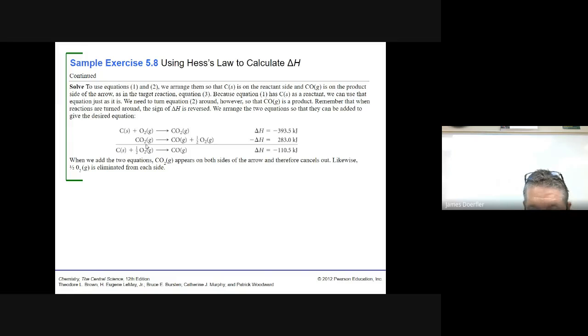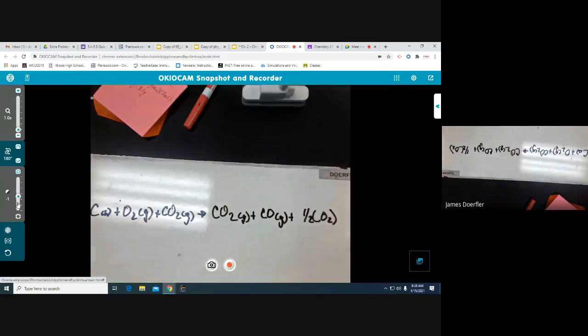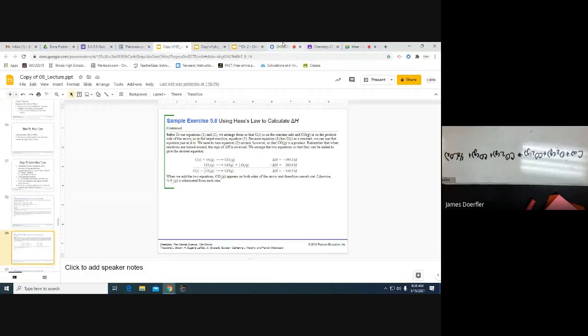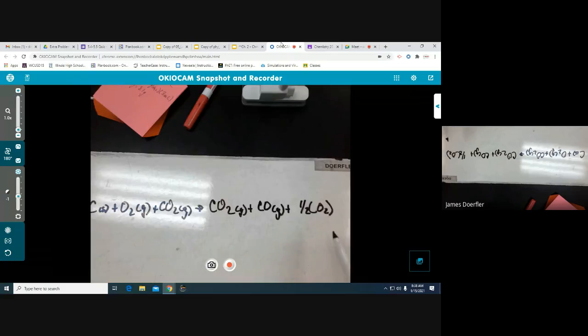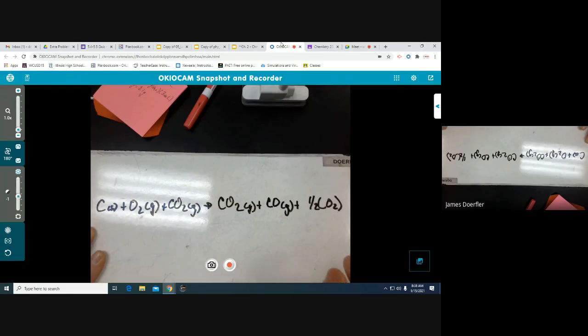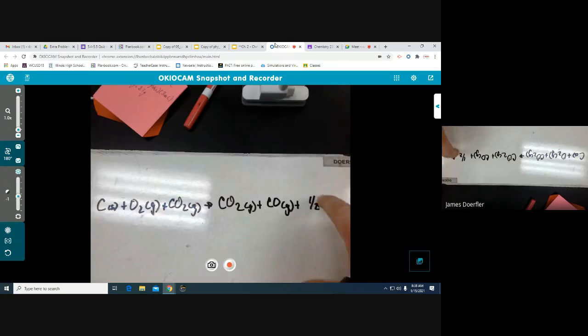C plus O2 yields CO2 plus one-half O2. So, what I did was I just add them all together. Put all the products together, I put all the reactants together on left-hand side of the arrow, same thing with my products on the right-hand side there.